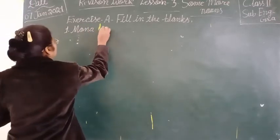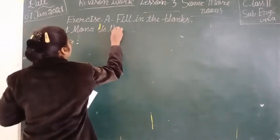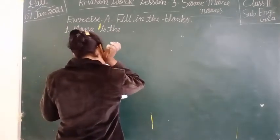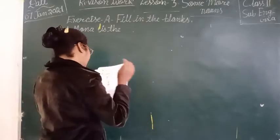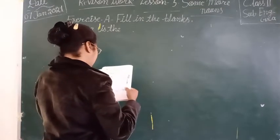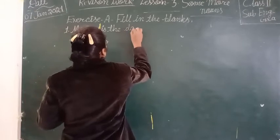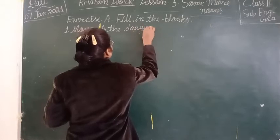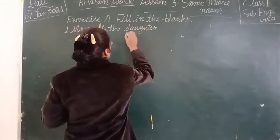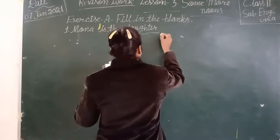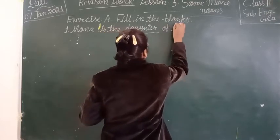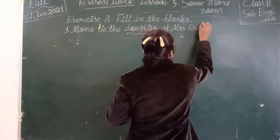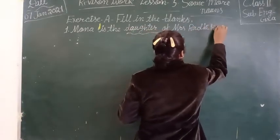Mona is the blank of Mr. Radhika. Mr. Radhika ki Mona kya lagti hai? Daughter. D-A-U-G-H-T-E-R. Fill in the blank mein kya hoga? Daughter. Daughter of Mr. Radhika.